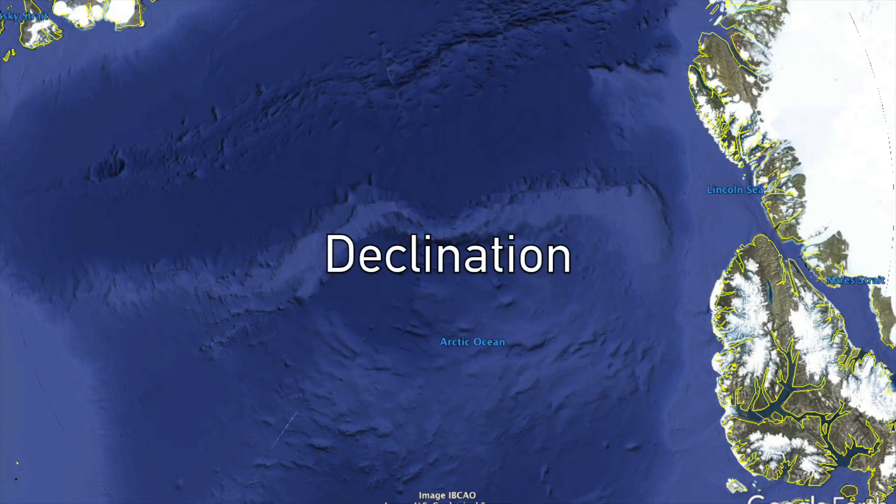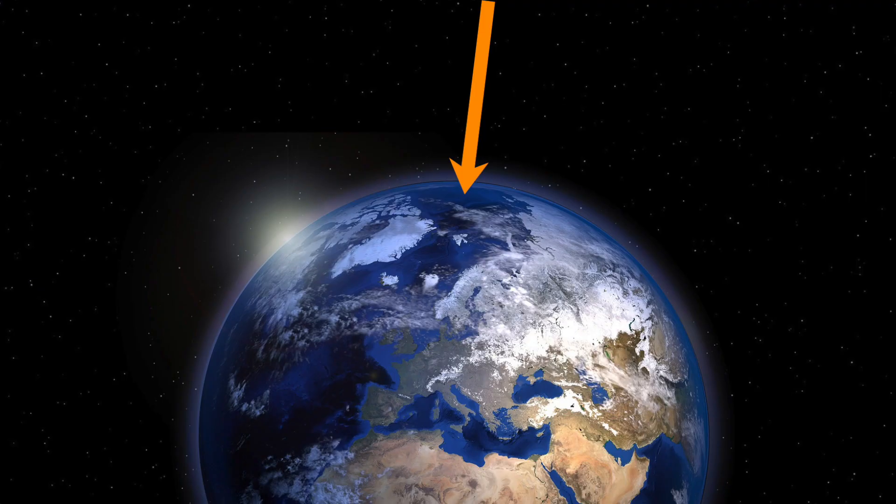Declination is a little bit more confusing. It's a result of the fact that the North Pole I've been referring to, the magnetic North Pole, is not actually in the same place as the geographic North Pole.